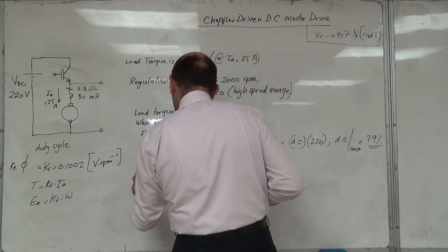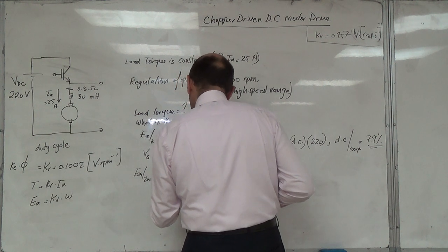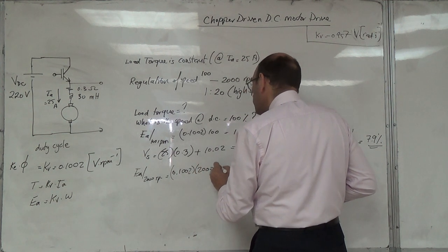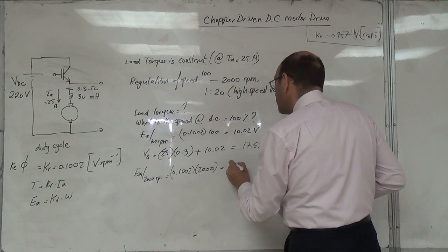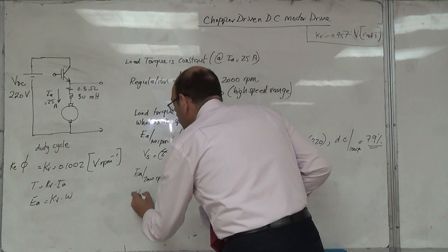And the E_A on 2000 RPM, it's 0.1002. What do you mean? It is two point, three point, four volts. You see, you have to V_S.